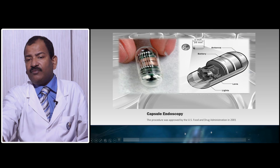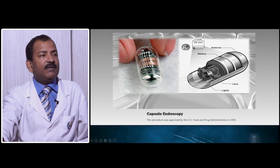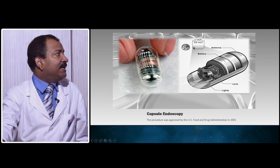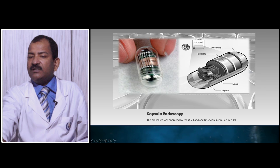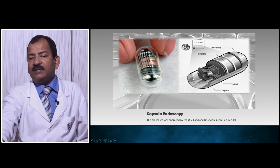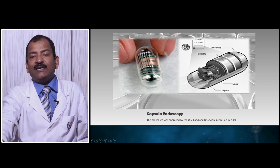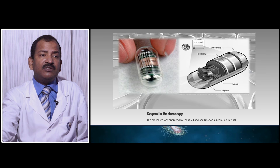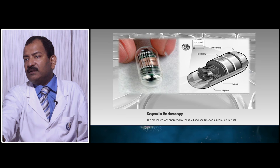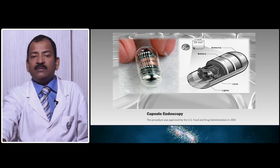The capsule endoscope has a lens that projects the image to the CCD. There are LED lights on the periphery, two batteries, and one antenna. Once it is dropped inside the abdomen, the light switches on; the image goes to the lens, the lens focuses it to the CCD, and via Bluetooth or wireless technology the image can be sent outside or memorized. Once the patient passes the capsule in the fecal matter, you can retrieve and examine it.